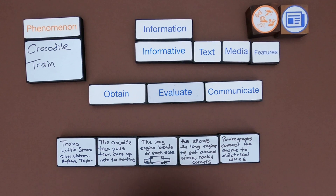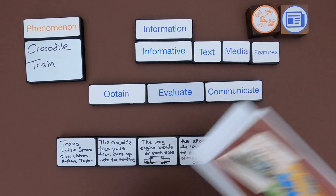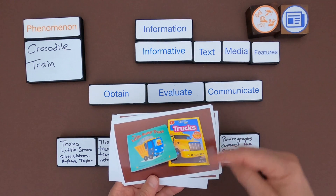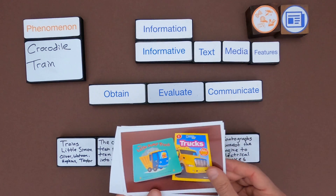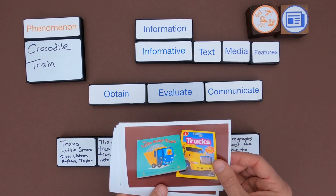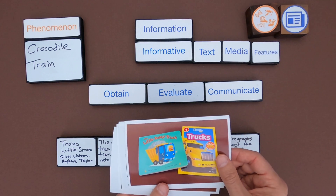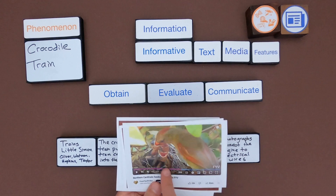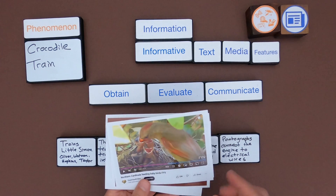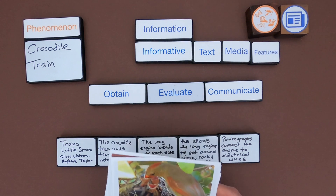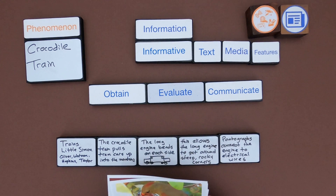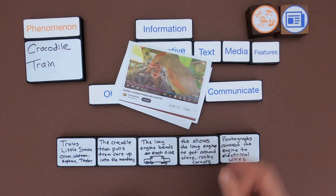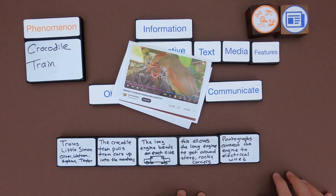Now that I've done that with trains, you could go through some other ones I've linked down below. You could look at a dump truck — either the little dump truck or this book on trucks — or you could start looking at media. I've got some text and a video around cardinals feeding themselves. But that is level one: obtain, evaluate, and communicate. All we're really trying to do is obtain and then describe the information. I hope that's helpful.